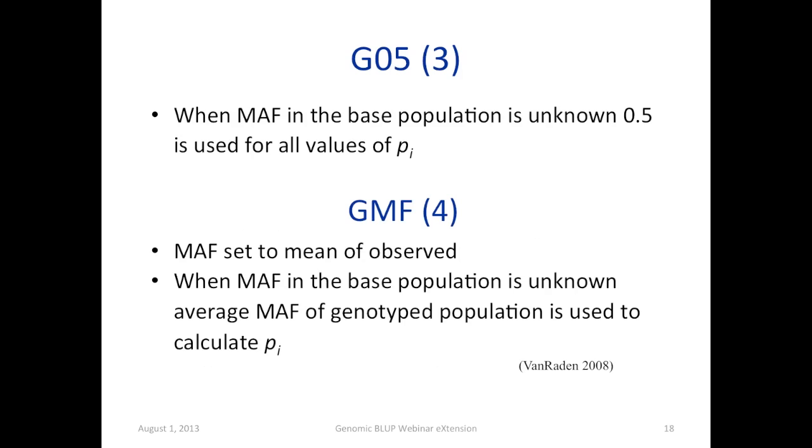And another one is GNF. Again, it's about minor allele frequency in the base population when it is not known. We use average minor allele frequency of genotyped population to calculate the minor allele frequency. So it depends on what kind of minor allele frequency is used, matrices are named G05, GNF.